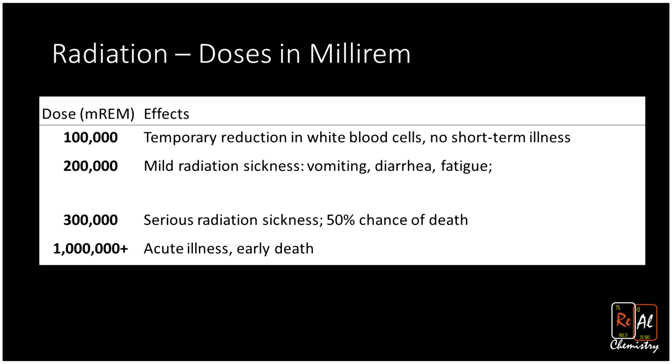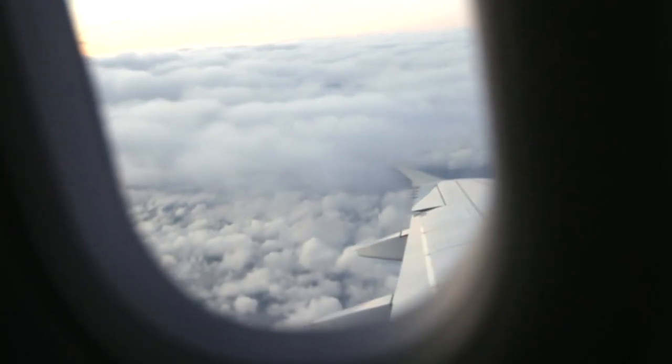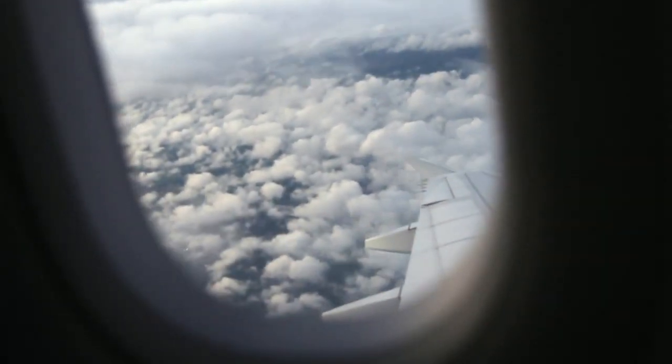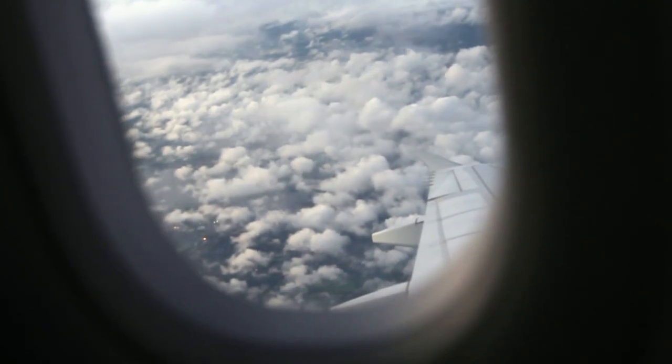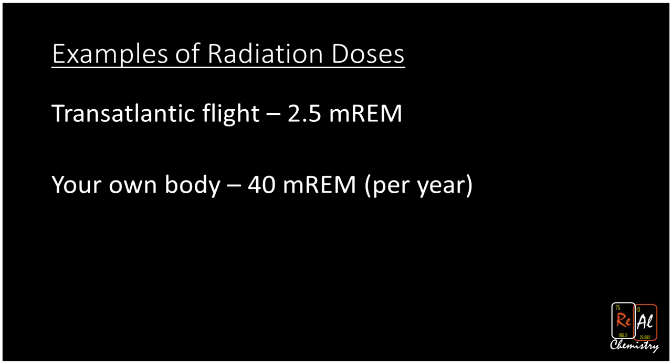Let's compare those to some doses you might see every day. If you take a transatlantic flight across the Atlantic Ocean, you get exposed to about 2.5 millirem — this is because you go higher up in the atmosphere where more of the sun's radiation can reach you. The radiation that comes from your own body turns out to be 40 millirem per year, because of, say, the radioactive potassium in it. And if you go get a chest X-ray, you get exposed to about 10 millirem of radiation.